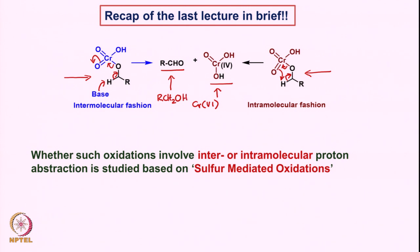The abstraction of a proton in an intermolecular or intramolecular fashion is something we need to establish. It is very difficult to do with chromium-based intermediates because the reactions are very fast. But whether such oxidations involve intermolecular or intramolecular proton abstraction has been studied using sulfur-mediated oxidations.